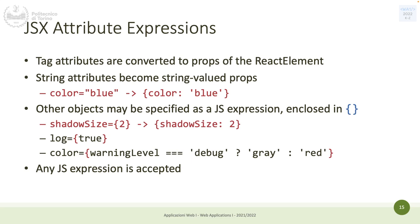Attributes in JSX are always passed as strings by default — `color="blue"` becomes the object property with "blue" as a string. If you want to pass a non-string value like a number, enclose it in curly braces: `shadowSize={2}`. The same applies for booleans — you want `true` to be the boolean value, not the string "true". You can also use JavaScript expressions inside curly braces to compute props on the fly.